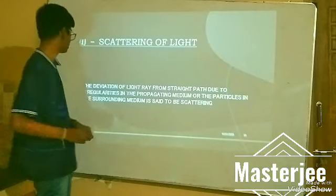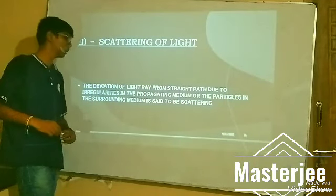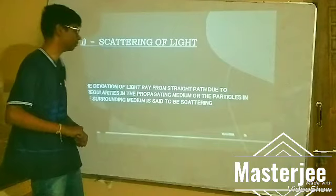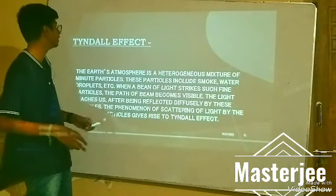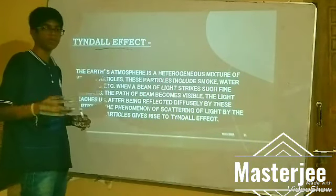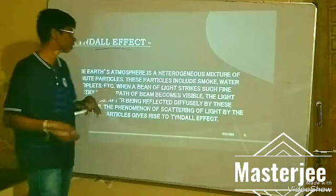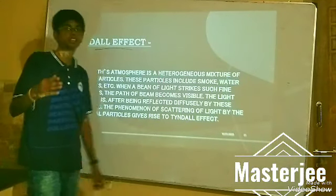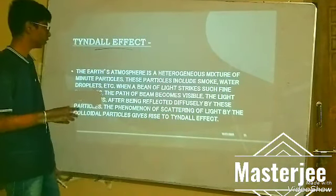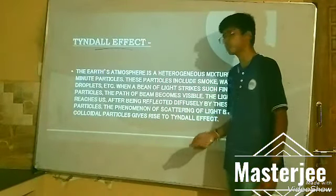The next topic is scattering of light — the deviation of light rays from a straight path due to irregularities in the propagating medium or particles in the surrounding medium. The first application is the Tyndall effect, which can be seen in a dark room with a hole in the roof or in a dense forest. Earth's atmosphere is a heterogeneous mixture of minute particles like dust, water droplets, fog, etc. When a beam of light shines through such fine particles, the path of the beam becomes visible as light is reflected diffusely by these particles — this is the Tyndall effect.